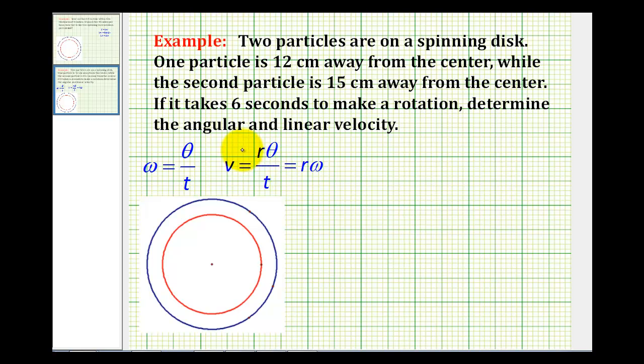Let's take a look at an example of angular and linear velocity. Two particles are spinning on a disk. One particle is 12 centimeters away from the center, while a second particle is 15 centimeters away.